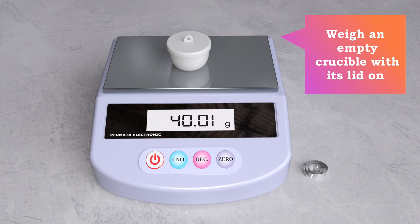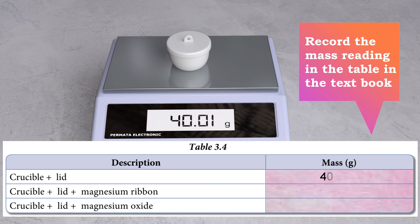Weigh an empty crucible with its lid on. Record the mass reading of 40.01 grams in the table in the textbook.